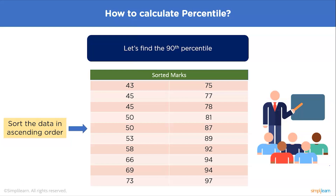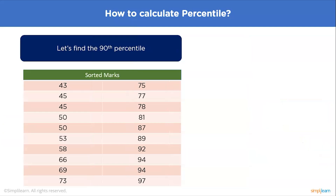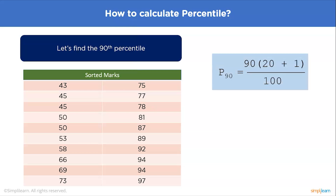The first step to calculate the 90th percentile is to sort the data in ascending order. Here we have sorted the data from 43, 45, 45, all the way up to 97. The next step is to substitute the values in the formula: P90 = 90 × (20+1) / 100, where 90 is the percentile we want to calculate and 20 is the number of observations.